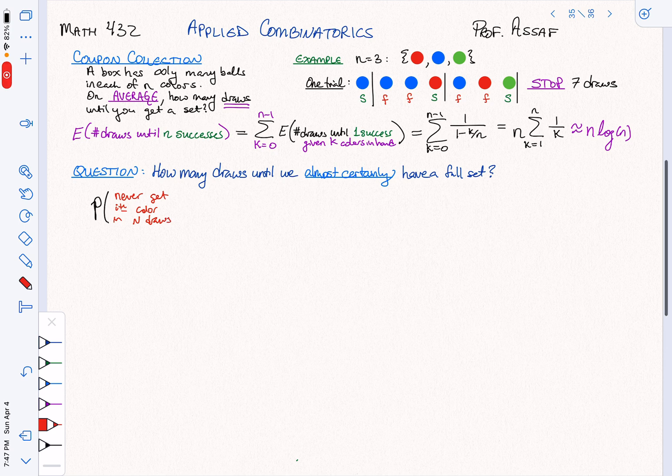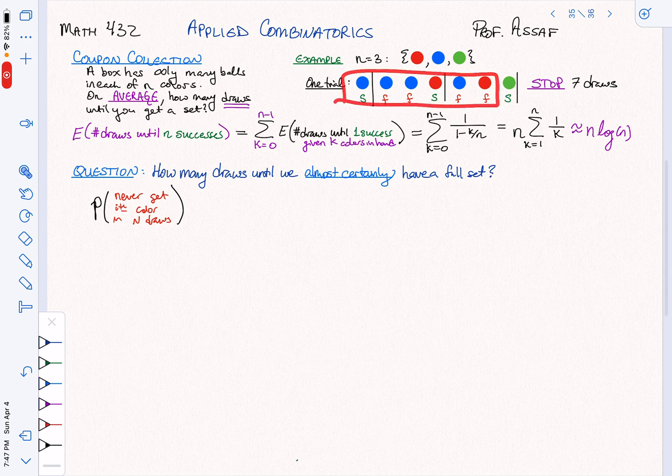So what is this probability? The probability that I've drawn n times and never got green. We can figure this out. It's just going to be (1 minus 1/n), so this is saying not the ith color, and then we do this n times. The probability of not getting the ith color is (1 - 1/n), where n is the number of colors I have, and we do it n times.